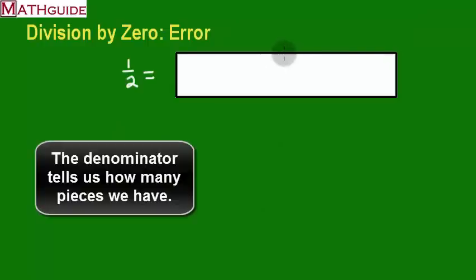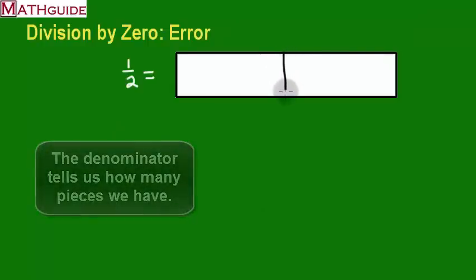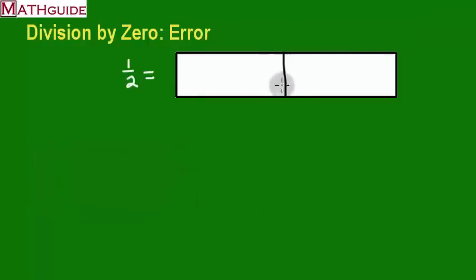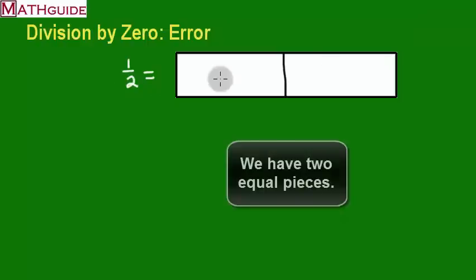So you divide this up. Now of course, technically this is supposed to be divided in half, exactly equally. I'm doing this by hand, so it's not going to look perfect. But that denominator tells you how many pieces we have. We've got two pieces. So I have the bar separated into two pieces.